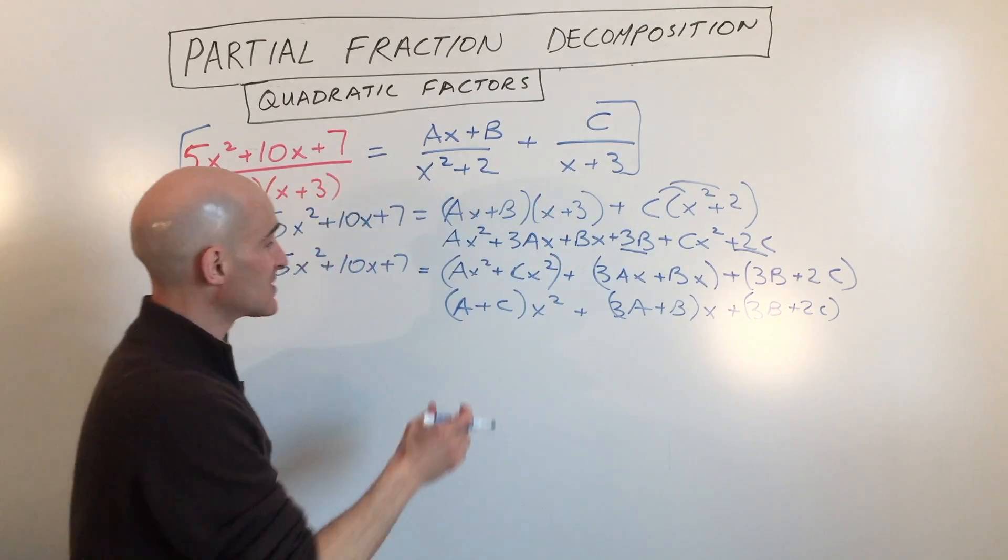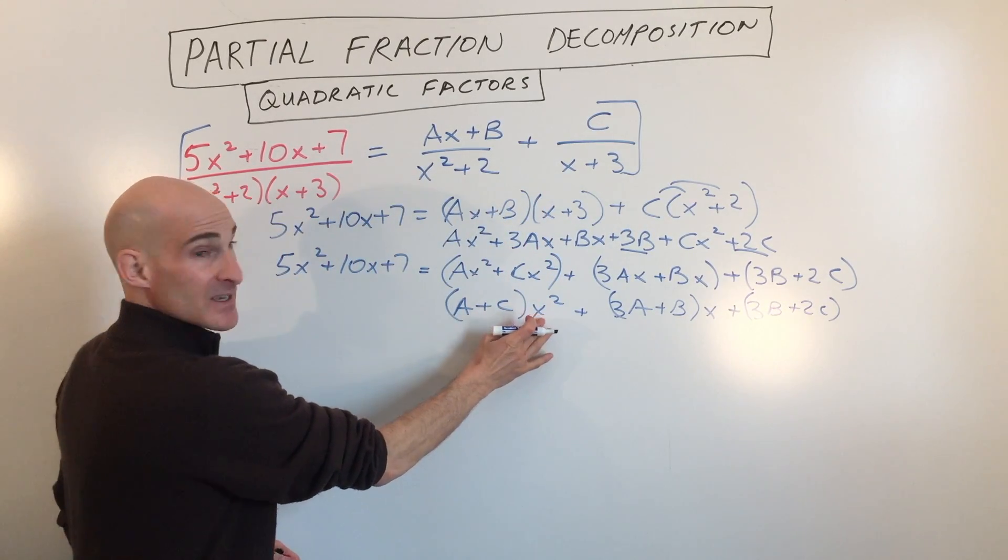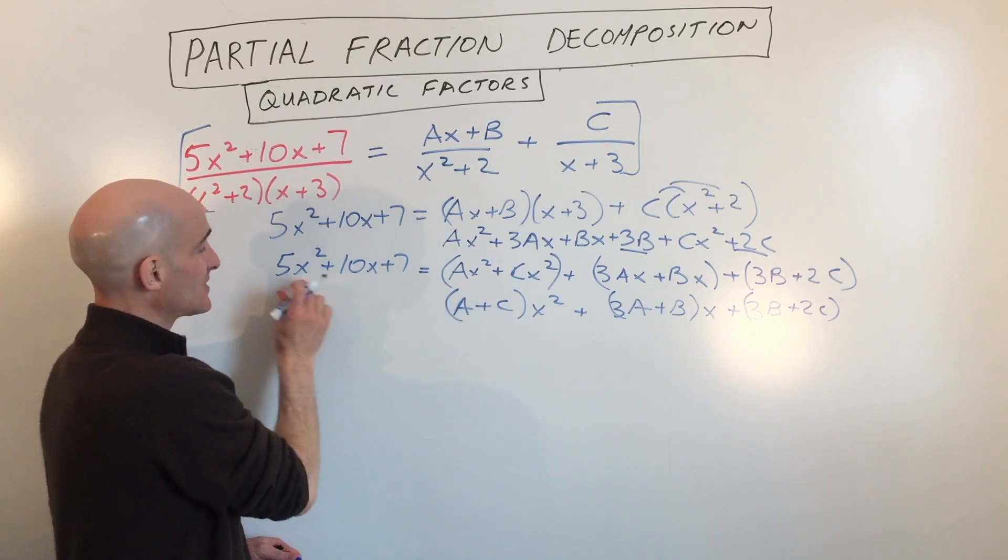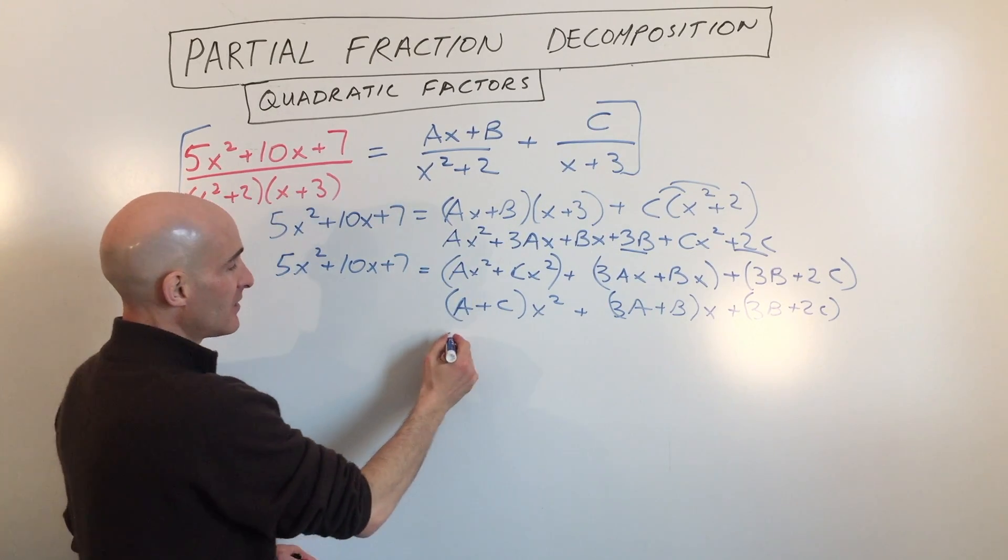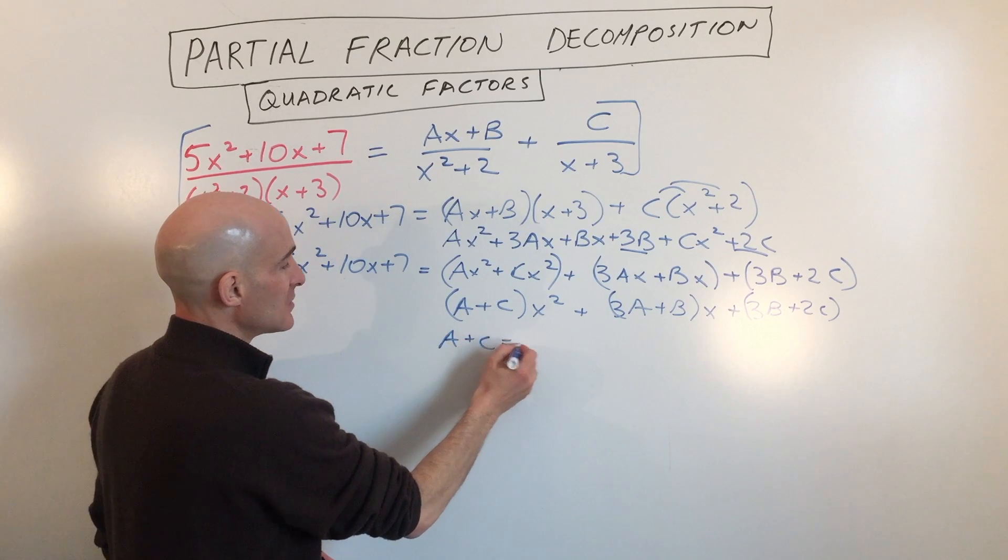Now what we're going to do is we're going to set, see this is x squared, right? See this is x squared. We're going to set a plus c equal to 5. So a plus c equals 5.